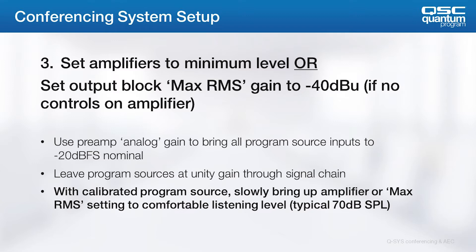Now, start playing a program source and calibrate it to a nominal level of negative 20 dBFS at the Q-SYS input block. Leave this program source playing with unity gain through the entire signal path to the output. Using an SPL meter, bring the amplifier controls or max RMS setting up until the SPL reaches a comfortable listening level. The standard for conferencing systems is 70 to 75 dB SPL.